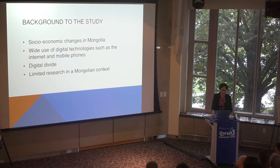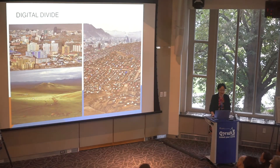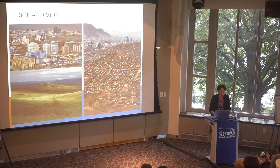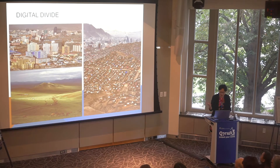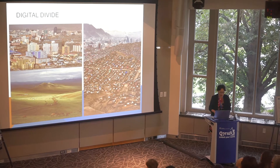Although the number of internet and mobile phone users has increased dramatically in recent years, a digital divide in terms of internet use exists between urban and rural areas in Mongolia. There is a digital divide not only at a macro level, depending on geographical location — whether people live in urban, suburban or rural areas — but also at a micro level, depending on people's age, networks, income, education levels, and access to computers and digital literacies.